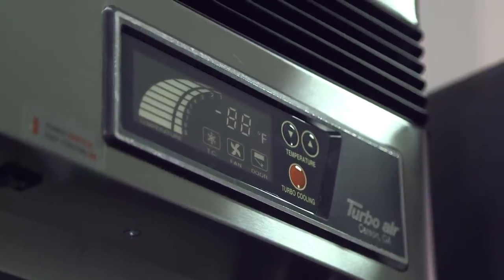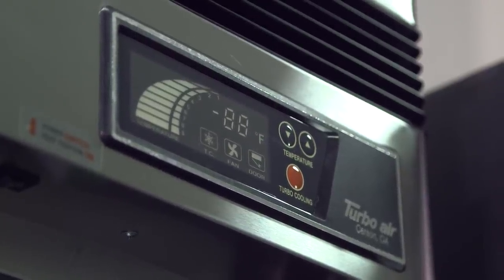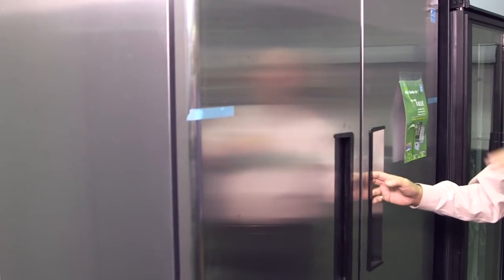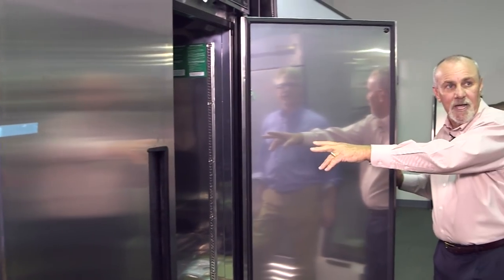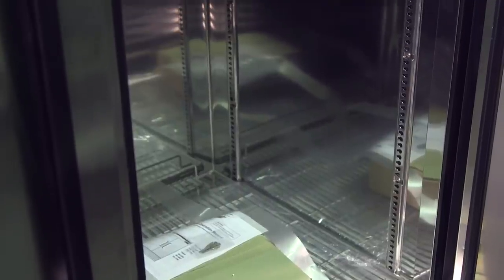This is an all stainless steel box, both outside—look how shiny that is. This particular unit has chrome shelves as opposed to the epoxy shelves. Options on this are about the same as True.